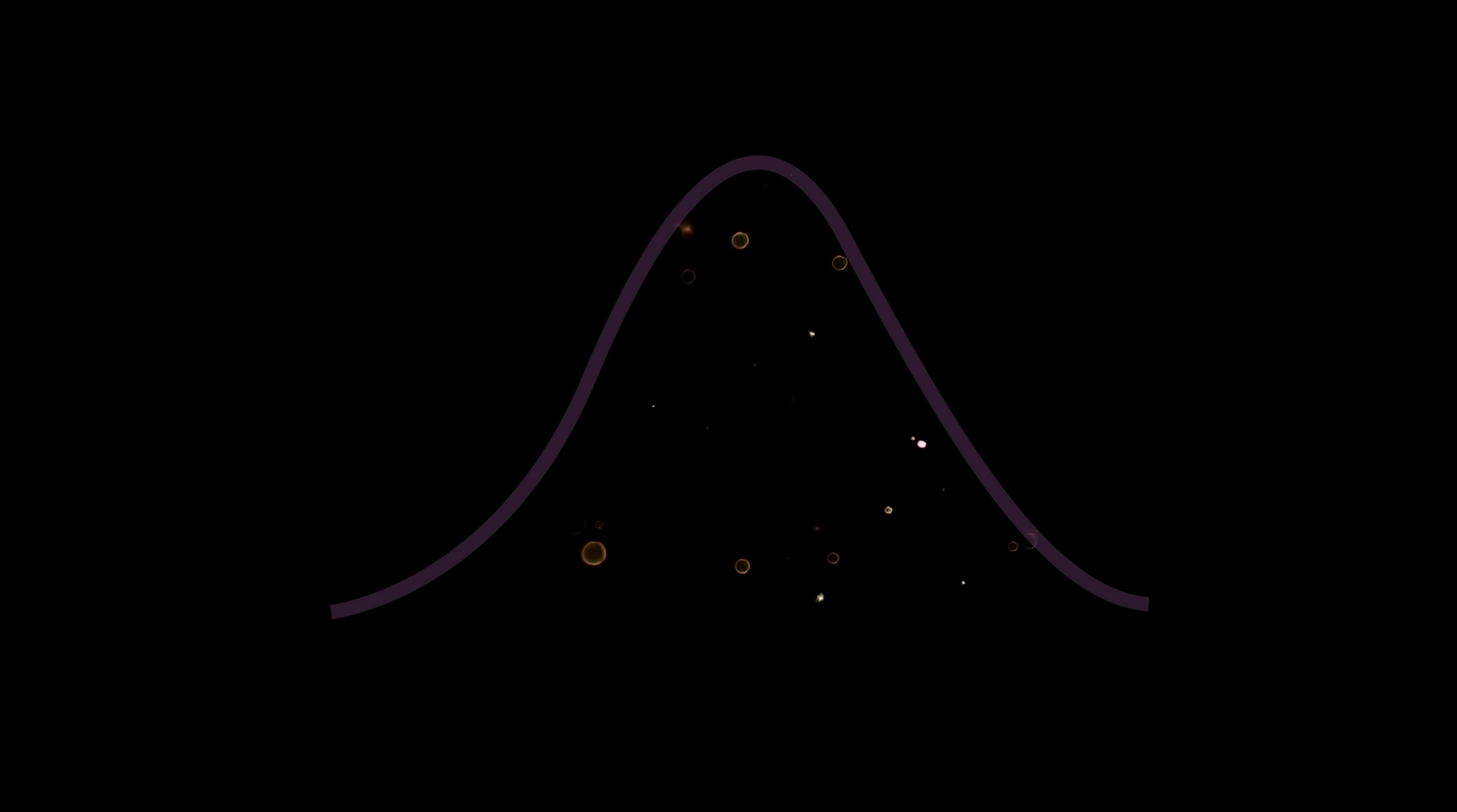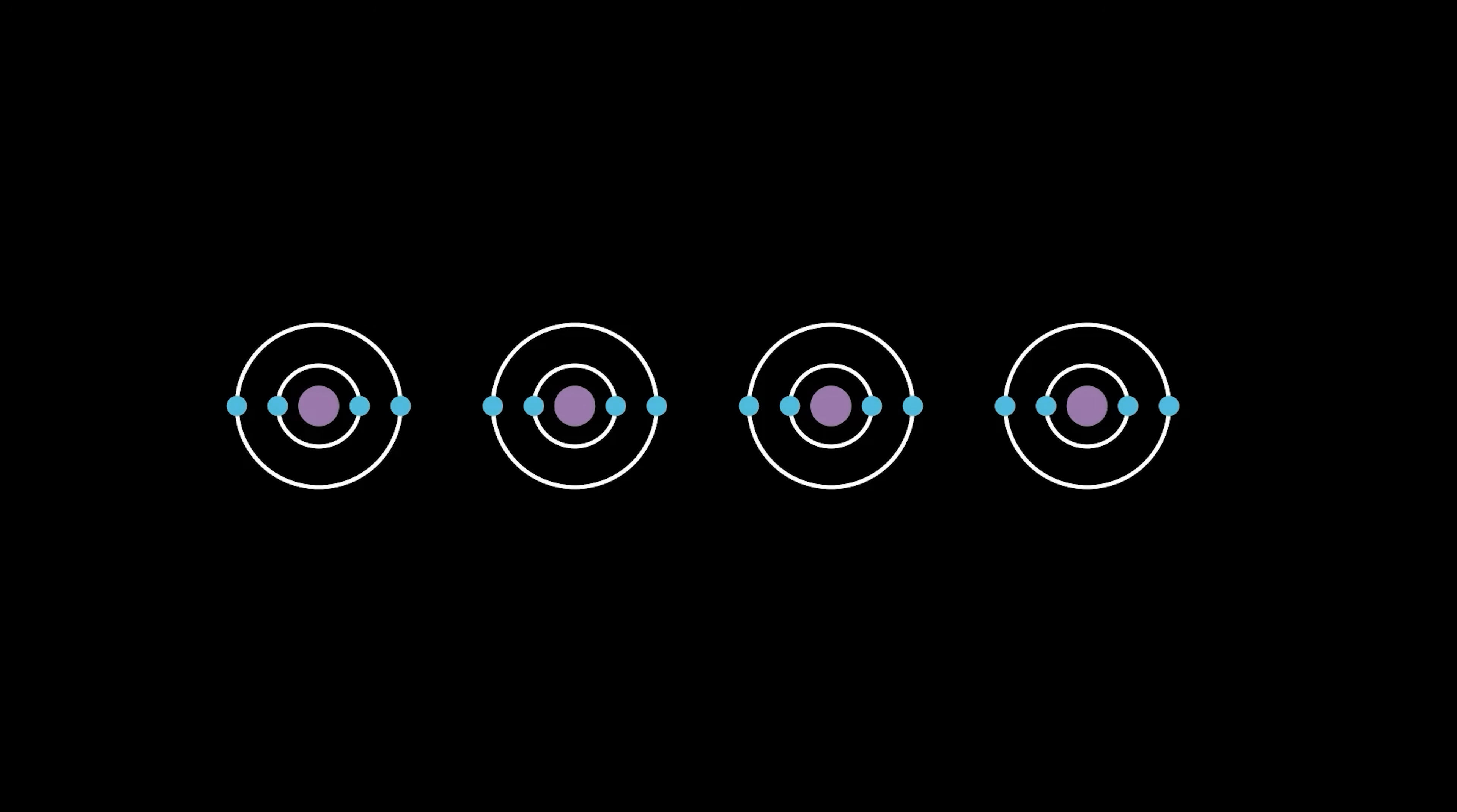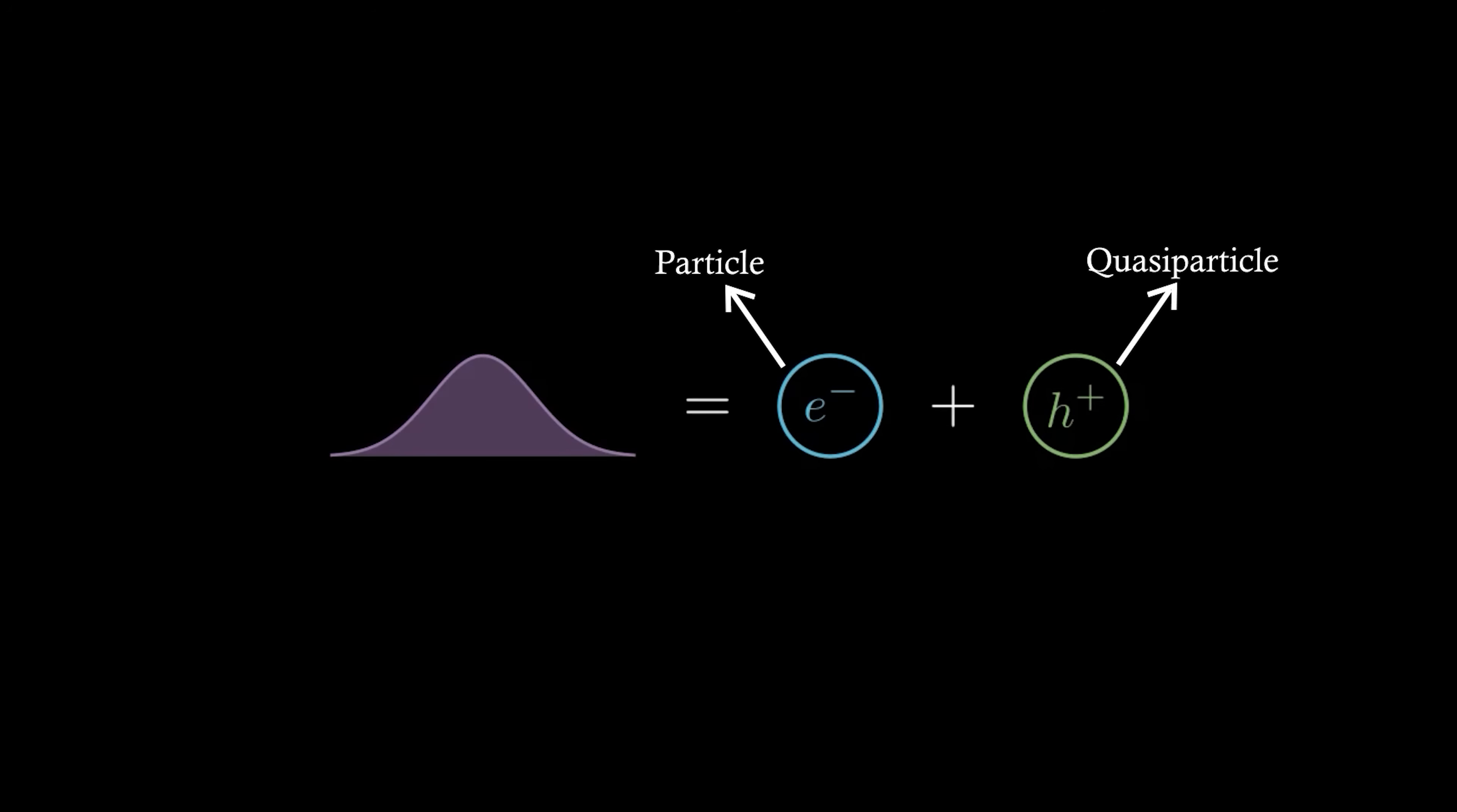Well that is a complicated question. Majorana fermions are a type of particle known as a quasi-particle. This means that they come about due to the interactions of a collection of other particles. Majoranas, in reality, are actually a quantum superposition of other particles. In this case, a Majorana fermion is a special superposition of an electron and a hole. Holes are also quasi-particles, and you can think of them as the absence of an electron. Basically, in a crystal lattice, when an electron moves from one atom to the other, the electron leaves behind a vacancy or hole. It turns out that we can treat this hole just like a particle itself. The Majorana fermion, then, is a quasi-particle that is a superposition of an electron, which is a particle, and a hole, which itself is a quasi-particle.